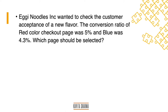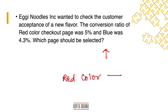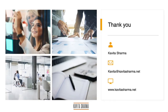Here is a question for you on your screen: which checkout page should be rolled out for the masses? The red checkout page had a conversion ratio of 5%, while the blue checkout page had a conversion ratio of 4.3%. If you are the portfolio manager for this brand, which checkout page would you select? You would select the one with the higher conversion — so the red color page would be better for future rollout.